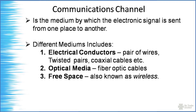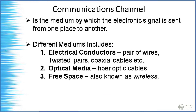A communication channel is the medium by which an electronic signal is sent from one place to another. Different mediums include electrical conductors such as copper in the form of twisted pair or UTP (unshielded twisted pair), and coaxial cables which are common in TV broadcast — the cable connecting to your TV is coaxial. Antennas also use coaxial cable. Then there is optical media, where the carrier is light or light waves.